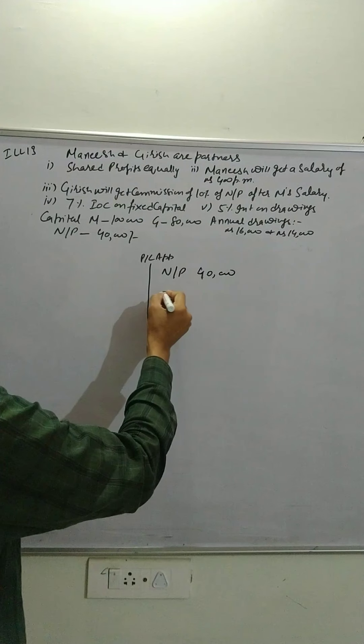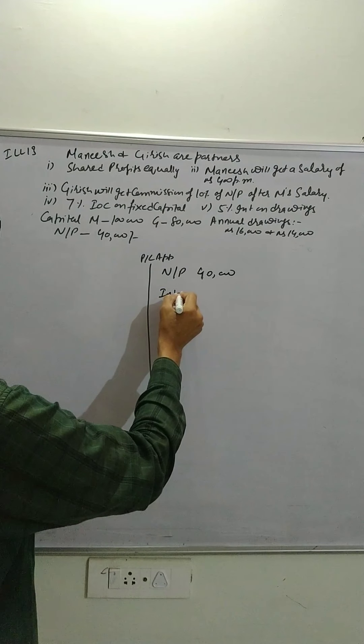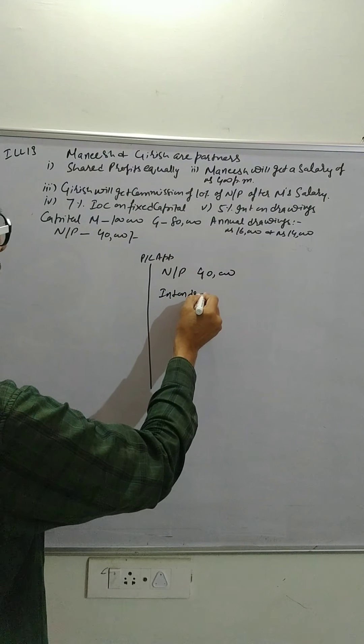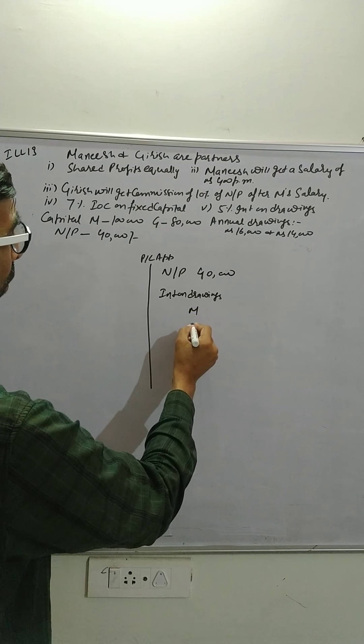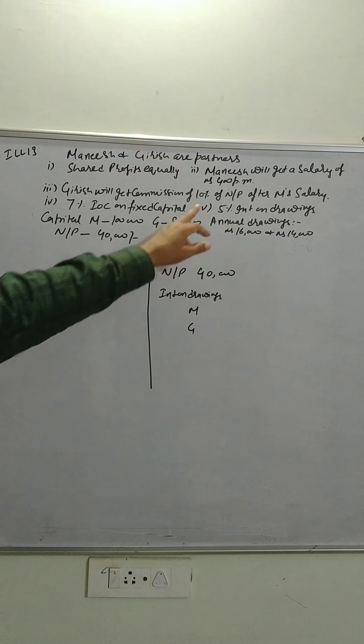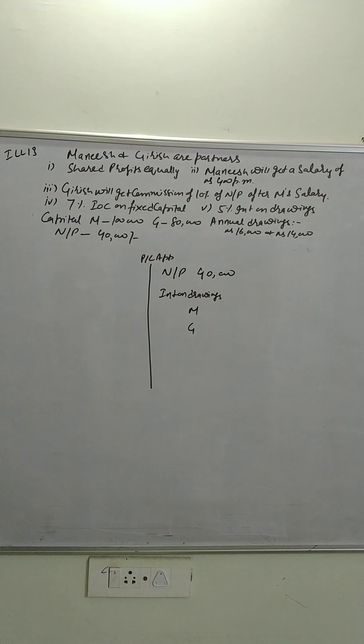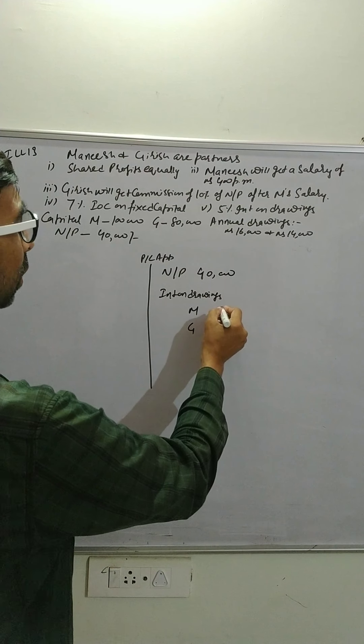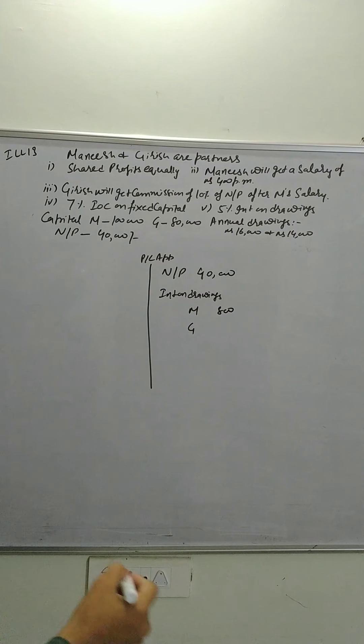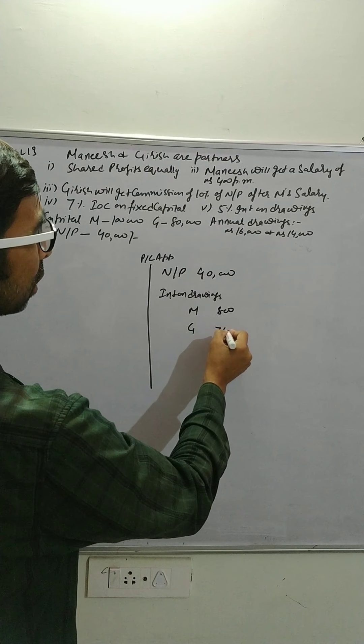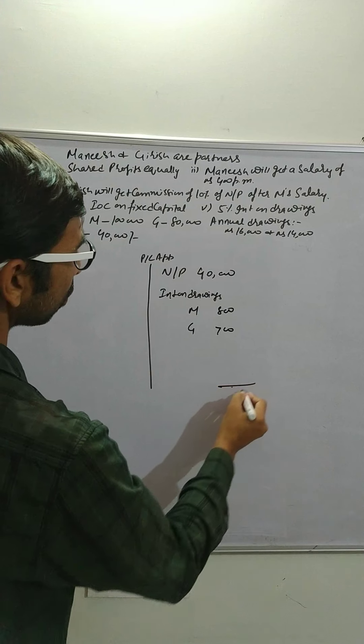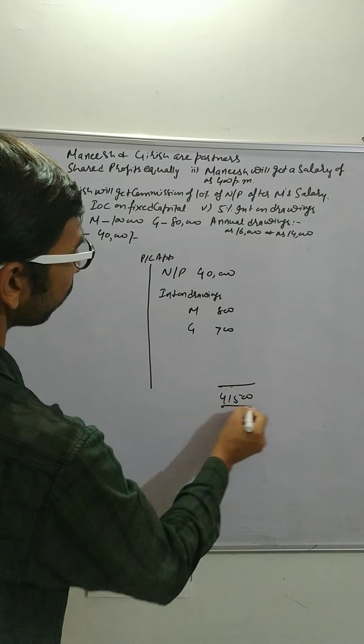Then we have interest on drawings. So M and G, 5% of 16,000, that turns out to be 800. And 5% of 14,000 turns out to be 700. So the total will be 41,500.